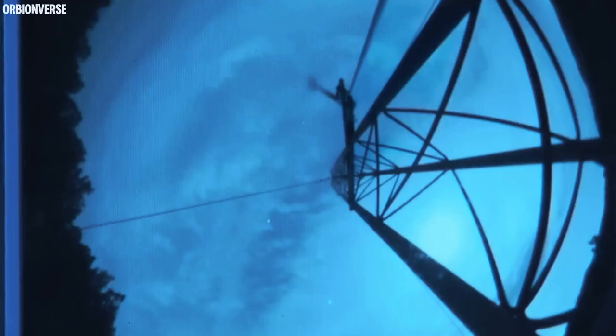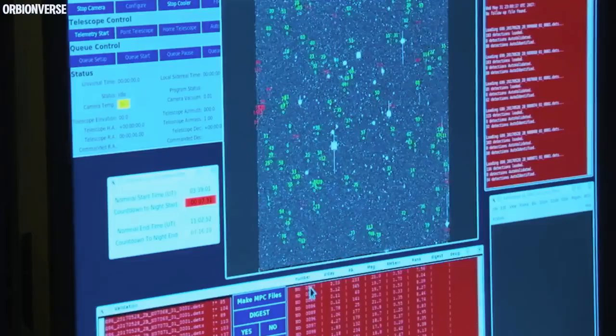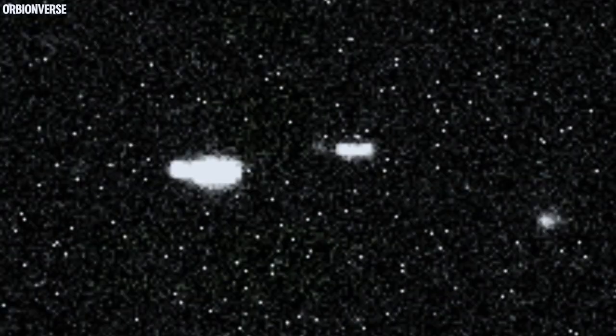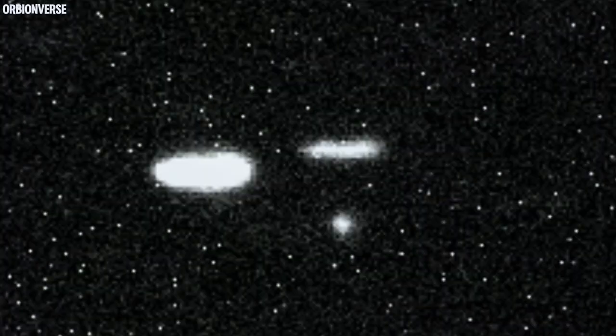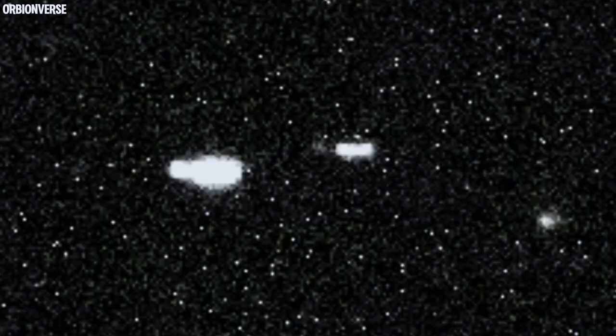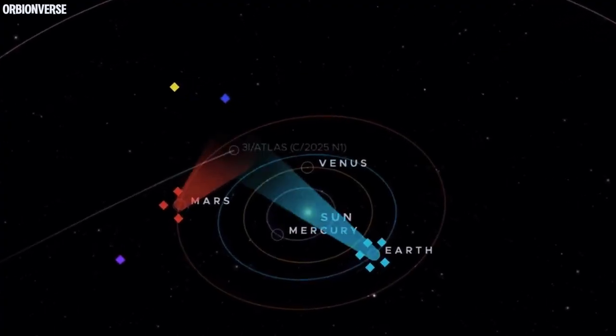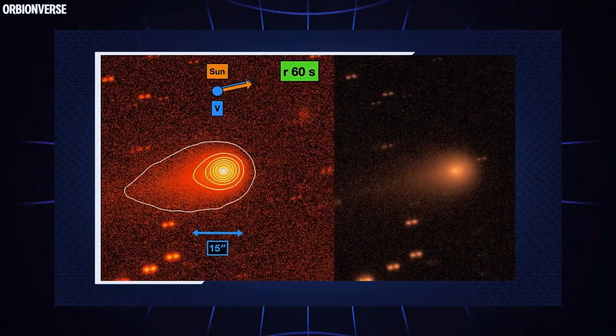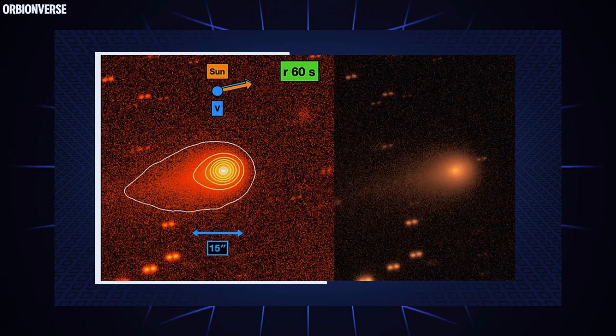It started quietly, almost too quietly. Astronomers noticed a faint object drifting across the outer edges of our solar system—a visitor not bound by our sun. Its name: 3I Atlas, only the third interstellar object ever detected passing through our neighborhood of space.